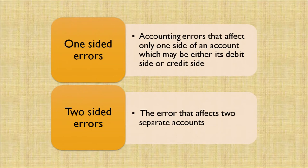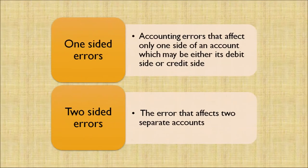One-sided errors occur when the debit balance does not agree with the credit balance in the trial balance. Two-sided errors are errors which affect two separate accounts — both sides of the trial balance agree but errors still exist across accounts.